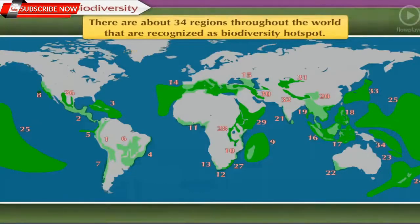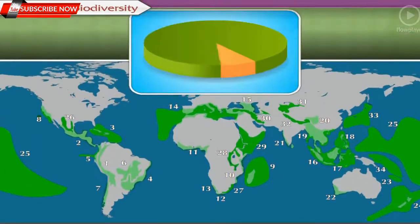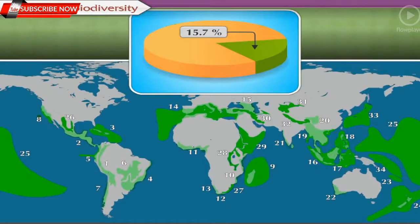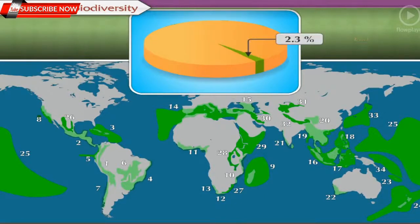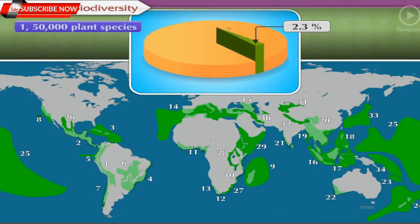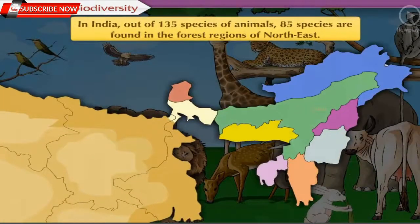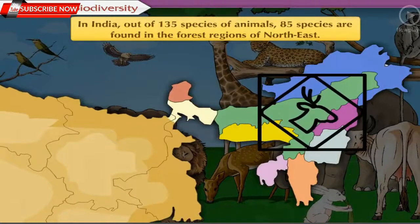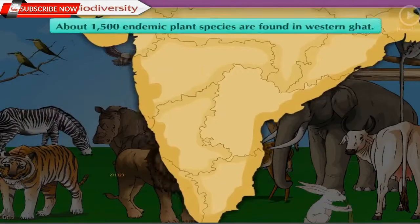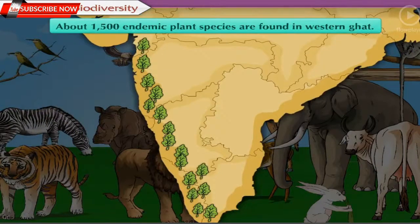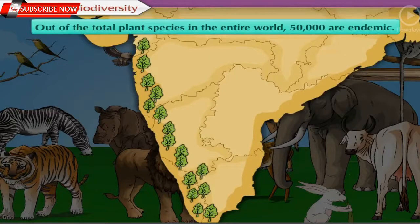There are about 34 regions throughout the world recognized as biodiversity hotspots. Earlier these areas occupied about 15.7% of the world's area, of which 86% has been lost. Nowadays only 2.3% of the hotspots are existing. It includes 1,50,000 species of plants, equivalent to 50% of the original number. In India, out of 135 species of animals, 85 species are found in the forest regions of the northeast. About 1,500 endemic plant species are found in the Western Ghats, and out of total plant species in the entire world, 50,000 are endemic.